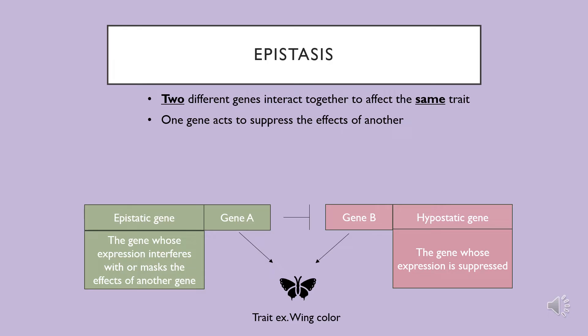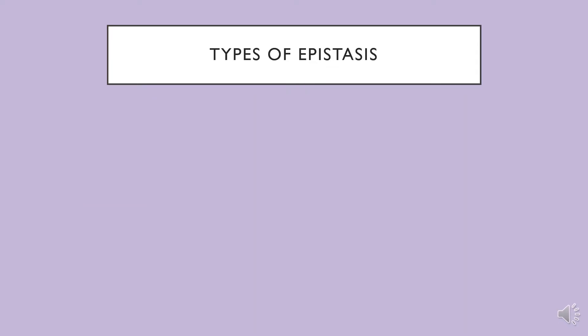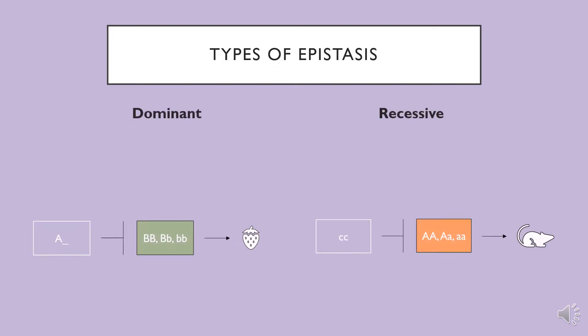As we can see from this interaction, the expression of one gene influences the effects of another, so these genes are not acting independently, and as a result we see deviations from expected Mendelian ratios. Now that we understand what epistasis is, let's explore the two main types: dominant and recessive.